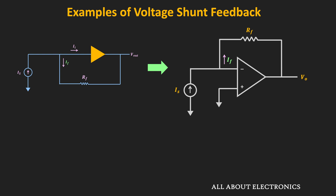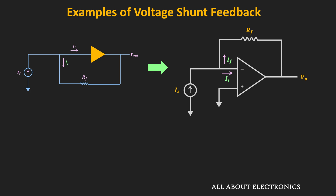In the op-amp circuit, the feedback resistor RF is connected between the output and the inverting node. The feedback current IF is roughly equal to minus Vout divided by RF, because the inverting node of the op-amp acts as a virtual ground and the input current to the op-amp is very small. So Is equals If, which equals minus Vout divided by RF. The trans-impedance gain Vout divided by Is equals minus RF.